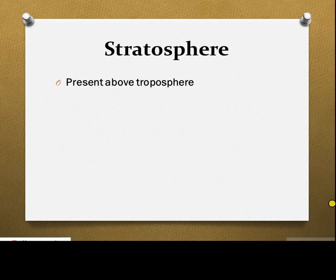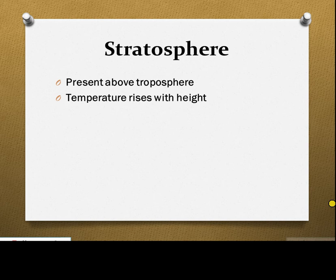The stratosphere is the layer present directly above the troposphere. In the troposphere, temperature decreases with height, but in the stratosphere, temperature rises with height. At the boundary of the troposphere and stratosphere, it reaches 0 degrees centigrade. The reason for the increase in temperature is the presence of the ozone layer in this region.